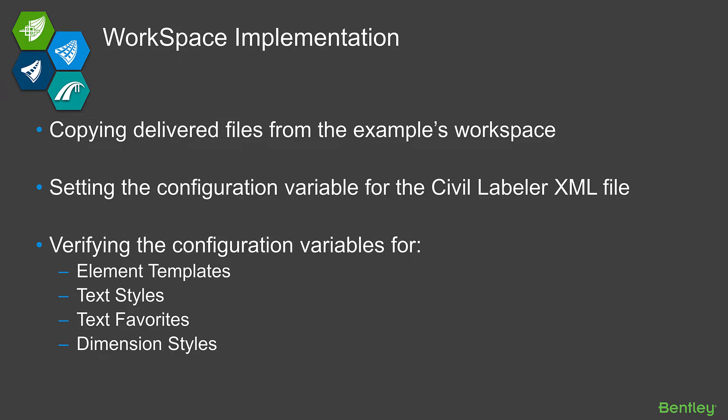Dan has talked about some of the different requirements, like dimension styles, text styles, text favorites, and even element templates. So, do we deliver something that will get us started? The answer is yes. We deliver both a metric and an imperial example version of a couple of different files, and then we're going to take a look at the configuration variable or variables that we need to examine in our current environment. The first thing we want to talk about is copying over the delivered files from our examples workspace, then the configuration variable, and verifying that our basic MicroStation configuration variables pick up the DGNLib that we're going to copy over.